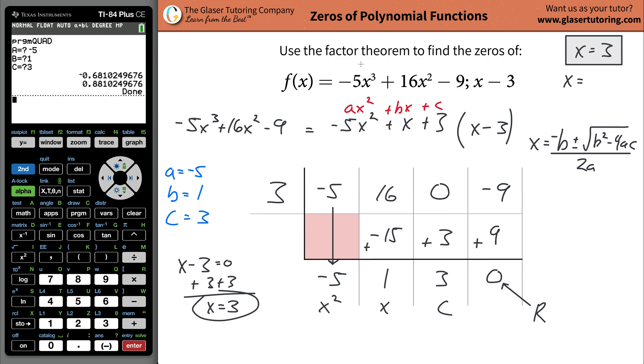In other words, these are the other two locations on the X axis, negative 0.68. I'm going to round a little bit here. And then 0.88. 0.88. So these are the other values where the function will cross that X axis. That's what it means to be a zero.